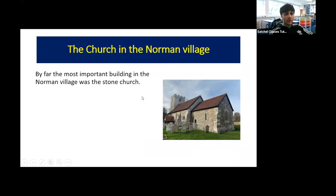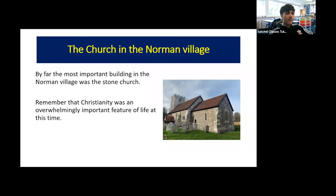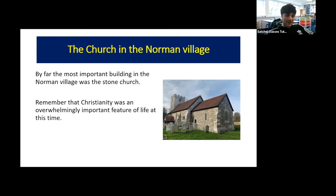The church was by far the most important building in the Norman village and was typically made of stone. Christianity at this time was overwhelmingly important — Roman Catholicism, the religion of the pope in Rome, was absolutely dominant. Remember that when William invaded and carried out the Battle of Hastings, one factor in his victory was having the papal banner — a banner from the pope saying God was on his side — which caused people to flock to William's army. Religion played a huge role both in wider society and in people's daily lives.